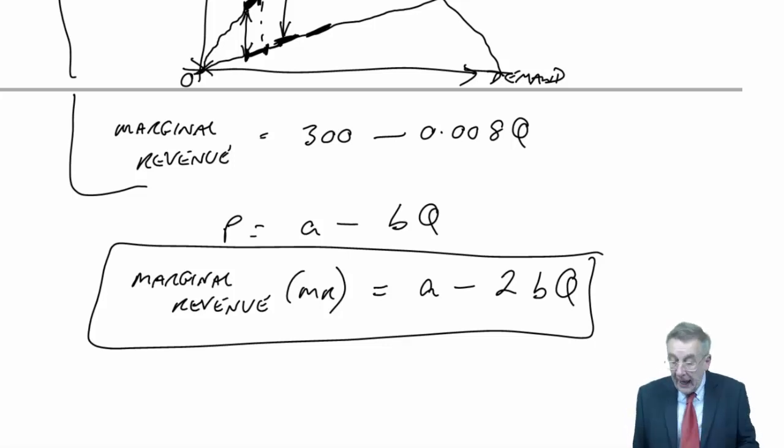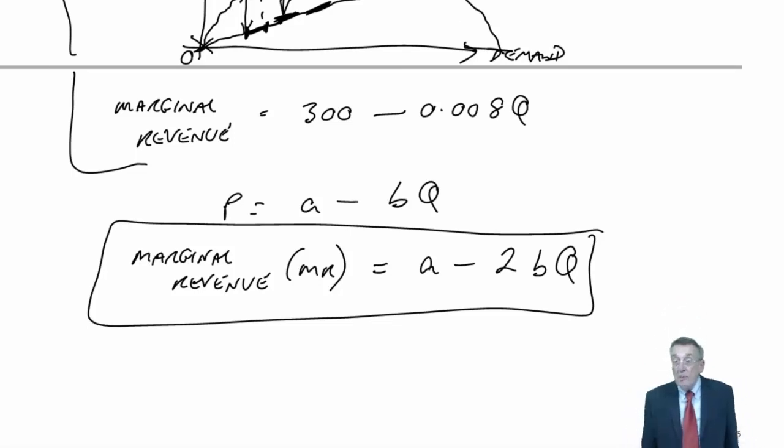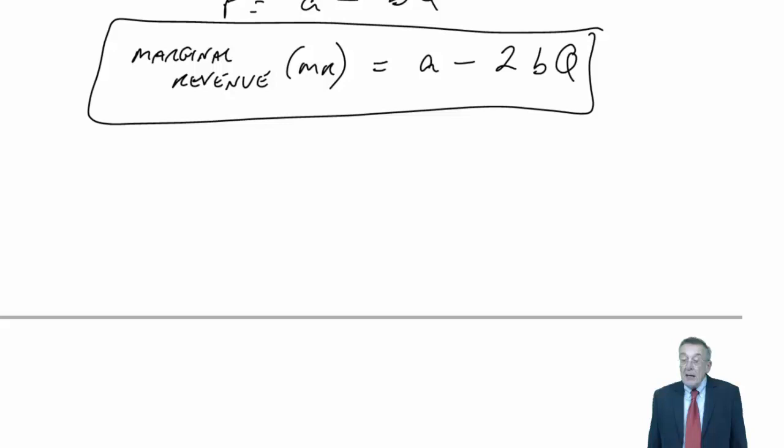So you can forget that last bit about the graph, although I hope it will have helped some of you. Look back at the question. We told the demand curve, so we know A is 300 and B is 0.004.